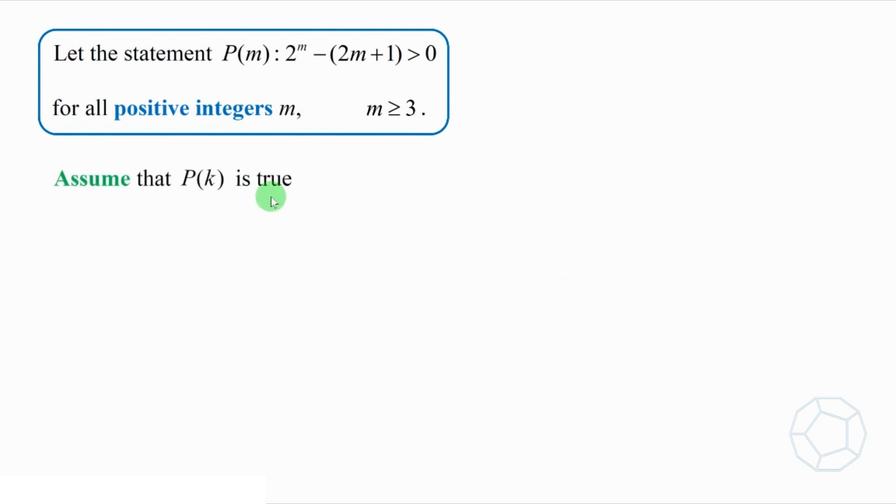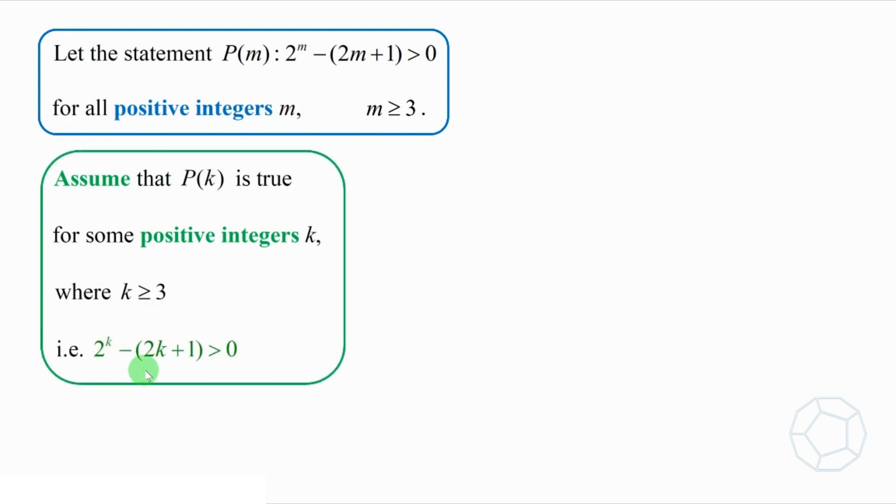Assume that p of k is true for some positive integer k, where k is larger than or equal to 3. That is, 2 to the power of k minus bracket 2k plus 1 is larger than 0. When m equals k plus 1, consider 2 to the power of k plus 1 minus bracket 2 times k plus 1 plus 1. We change the first term to 2 times 2 times 2 to the power of k and the second term is 2k plus 3.